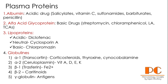Globulins are mainly five types: alpha-1, alpha-2, beta-1, beta-2, and gamma globulin. Alpha-1 globulin (also called transcortin) binds corticosteroids, thyroxine, and cyanocobalamin. Fat-soluble vitamins A, D, and K bind with alpha-2 globulins. Ferrous iron mainly binds with transferrin (beta-1 globulin). Carotenoids mainly bind with beta-2 globulins. Various antigens bind with gamma globulin.